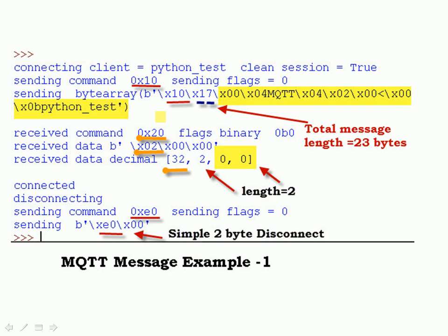Here's a message showing the client connecting to the server and sending the connection control header — you can see hexadecimal 10 there. This is the actual payload it sends. Some of it you can read, some of it you can't — remember it's sent as binary, but the Python print statement does print out the ASCII characters if it recognizes them. So you can see 'MQTT' and 'Python test', which is the name of the client used to connect. The total message length is hexadecimal 17, which corresponds to decimal 23, so it's 23 bytes following the length field.